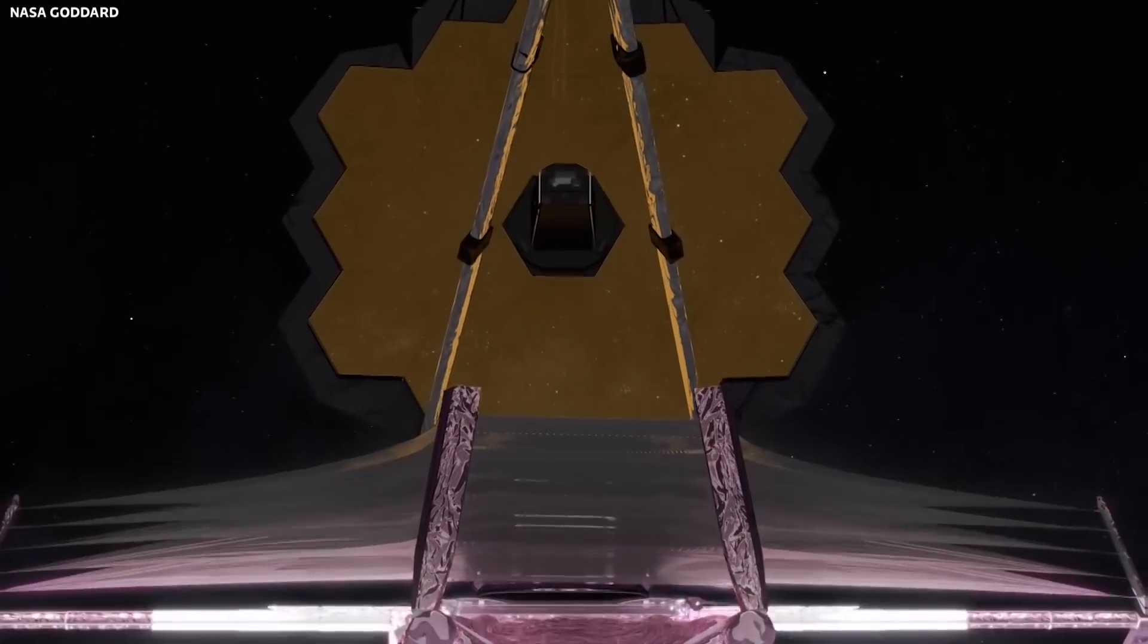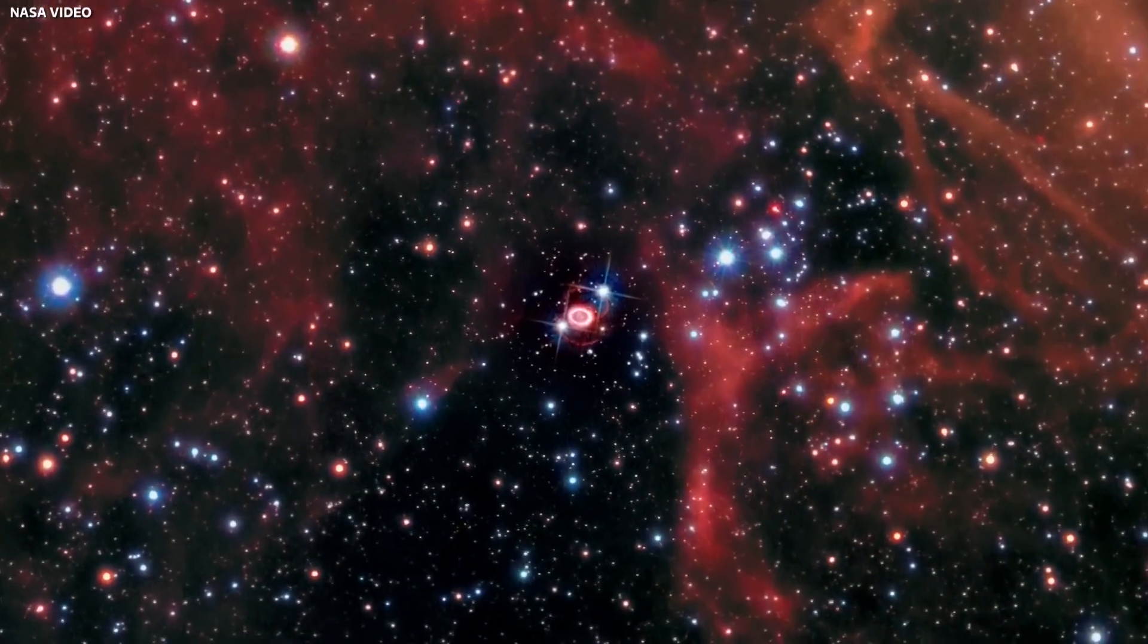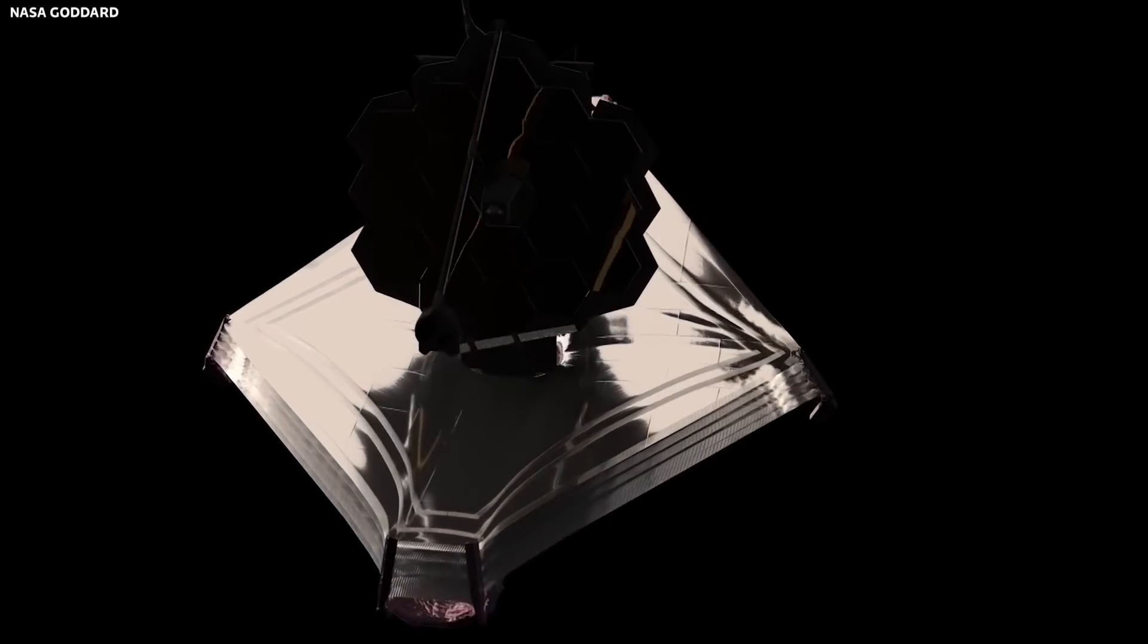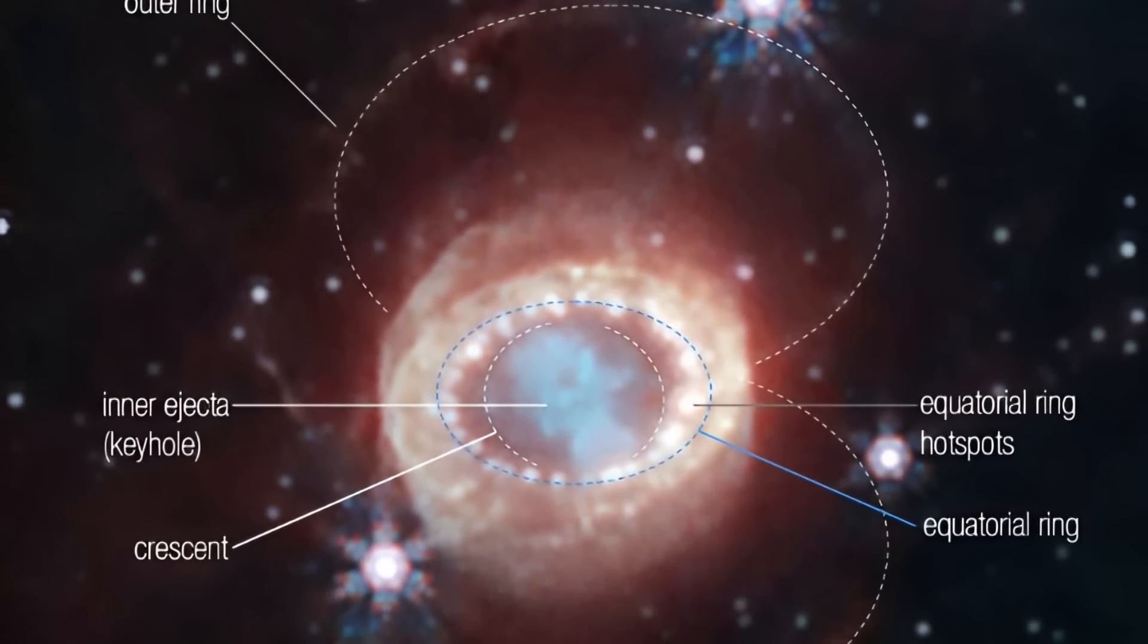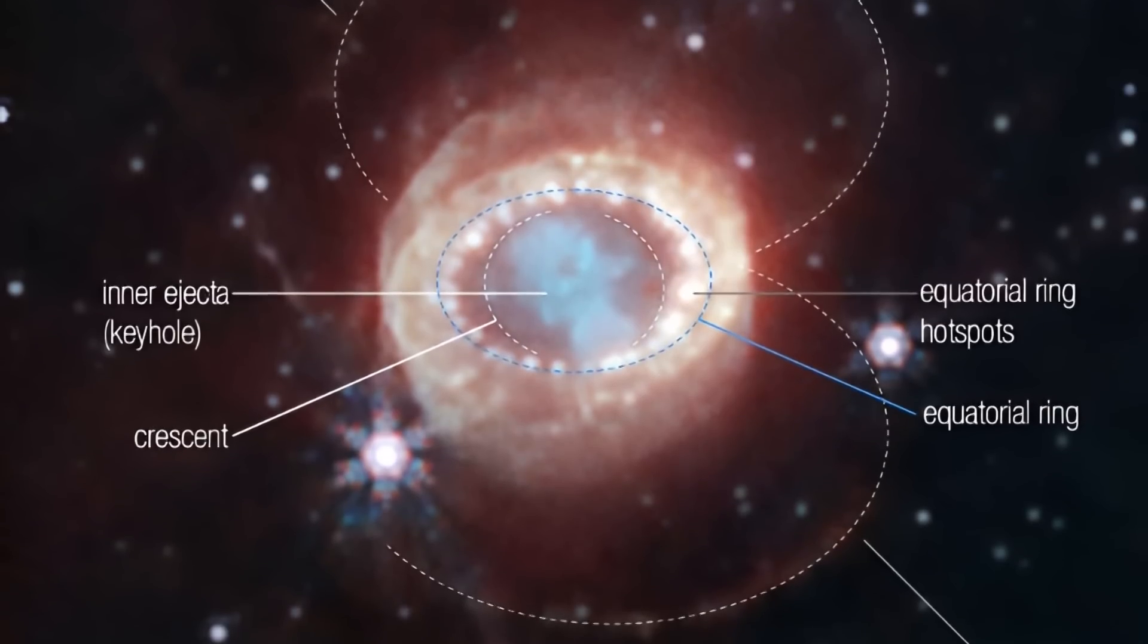However, the introduction of the James Webb Space Telescope has provided an unprecedented view of this iconic supernova. The telescope's NIRCam captured the most detailed images of the supernova, showcasing its equatorial and outer rings, crescent shape, inner ejecta and a unique keyhole structure.